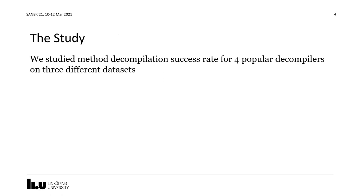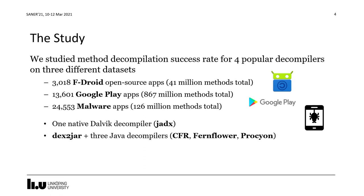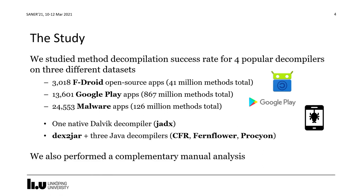In our study we investigated the method decompilation success rate for four popular decompilers on three different datasets: specifically about 3,000 open source apps from the F-Droid repository, about 14,000 apps from Google Play that we crawled in preparation for this study, and about 25,000 malware samples from a previous collection of Android malware. For the decompilers we used the native Dalvik decompiler JADX, in addition to three popular Java decompilers — CFR, Fernflower, and Procyon — using dex2jar to convert the dex files of Android apps to jar files. We also performed a complementary manual analysis that I will return to later.